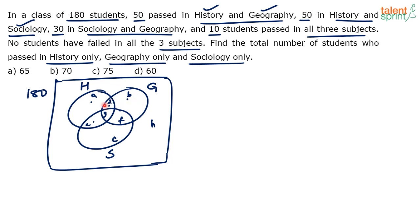D represents those students who passed in History and Geography only — it doesn't include Sociology. Similarly, F and E represent their respective two-subject-only combinations. H is the region outside all three circles — it represents students who failed in all three subjects, i.e., passed in none. G is the most overlapped region, covered by History, Geography, and Sociology, so it shows students who passed in all three subjects. Now we allocate the given numbers into these regions to find the answer.